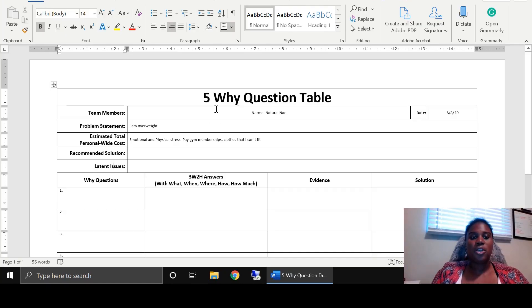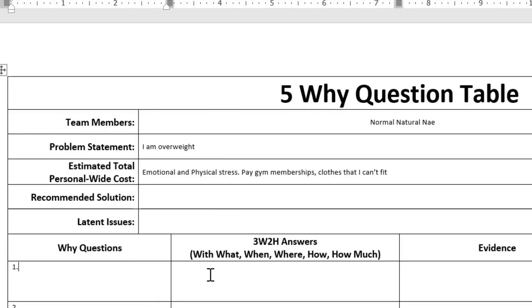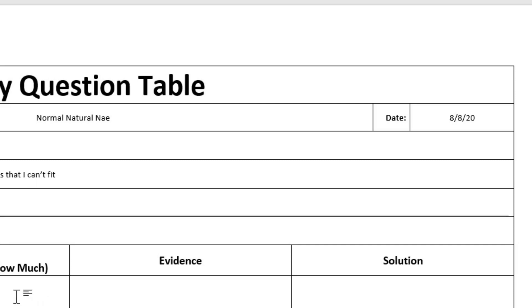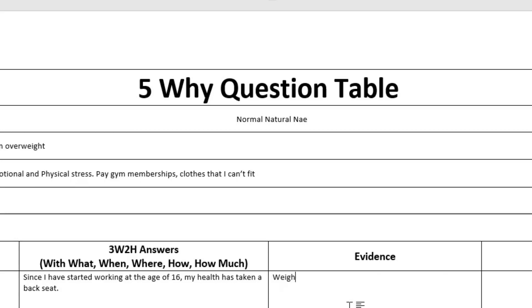Right now we're not going to write our recommended solution yet. So far you have the problem statement — which could be 'I am overweight,' 'I am in debt,' or 'I am not confident about myself,' whatever it is. Put that as your problem statement. Now go to Step 1: why am I overweight? You want to put as many details as you can in this section, then state your evidence and your immediate solution. Because I started working at age 16, my weight has taken a back seat. Evidence of this would be my continuous weight gain since working at Burger King at 16, a freshman 50 in college, three pregnancies, and stress.